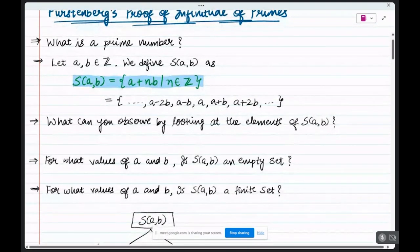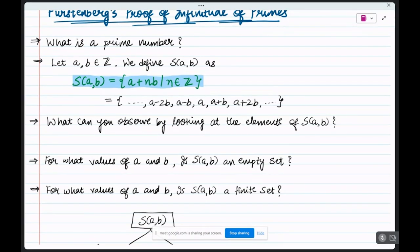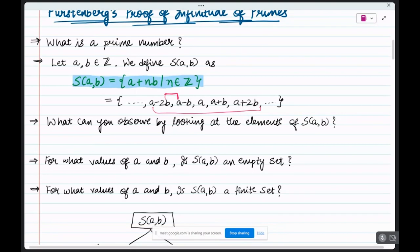In order to prove this, let's define a specific family of subsets of Z. Let A, B belong to integers and define the set S(A,B) as consisting of all integers which can be written in the form A + nB, where n belongs to integers. So the set looks like A, A ± B, A ± 2B, and so on. Every element in this set differs by B.